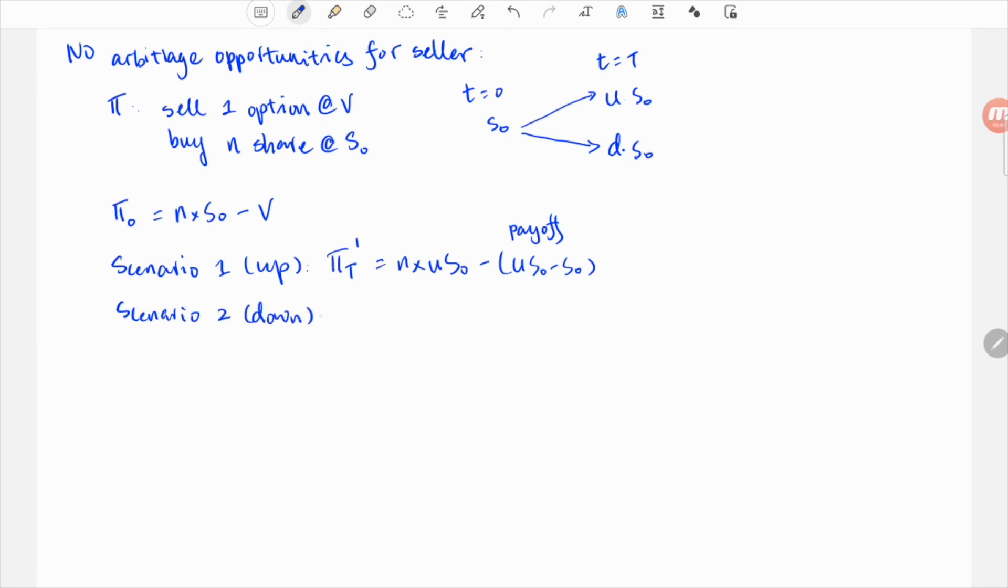For the at-the-money option, when the stock goes down to D times S0, the portfolio's value is just N times D S0 with option value going to zero since it's out of the money. Now the math here is quite simple. Since everything is linear, we set the two ending portfolio values to be equal and get N shares to be (U - 1) divided by (U - D).